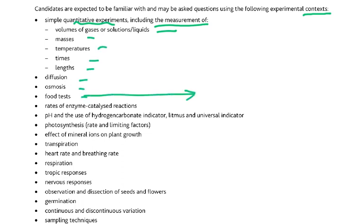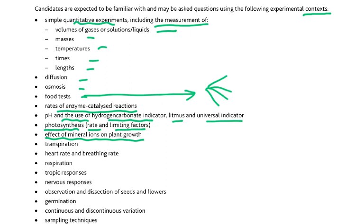Candidates are expected to be familiar with and may be asked questions using the following experimental contexts: simple quantitative experiments including measurement of volume of gases, solutions or liquids, masses, temperatures, times, lengths, diffusion, osmosis. We must know all the food tests. Then rate of enzyme-catalyzed reactions, pH, use of hydrogen carbonate indicator, litmus and universal indicator, photosynthesis including rate and limiting factors, effect of mineral ions on plant growth — nitrate ions and magnesium ions. If a plant does not get nitrate ions it shows stunted growth; if it lacks magnesium, which is required for the chlorophyll molecule, there is less chlorophyll, less photosynthesis, less glucose, less growth, less respiration, less energy released. Then transpiration, heart rate, breathing rate, respiration, and tropic responses — this is new.